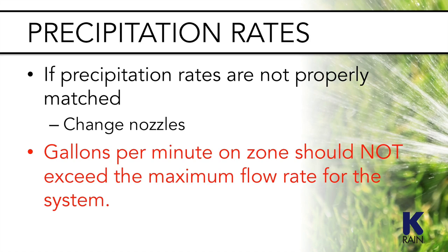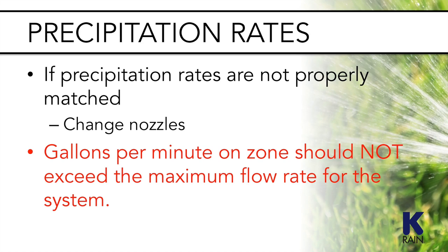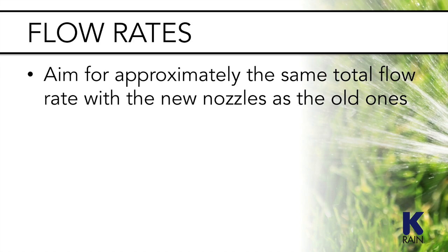Be careful to attend to the total number of gallons per minute on the zone — this should not exceed the maximum flow rate for the system. Aiming for approximately the same total flow rate with new nozzles as with the old ones will ensure that there is enough flow for the zone. For instance, if you have a zone with two quarter circle rotors and two half circle ones, all with 2.0 GPM nozzles, you have an 8 GPM zone. If you change the half circle rotors to 4.0 GPM nozzles, the zone becomes a 10 GPM zone, which might be too high. A safer choice would be to replace the quarter circle nozzles with 1.0 GPM nozzles to achieve matched precipitation, creating a 6 GPM zone and lowering the flow rate instead of raising it.